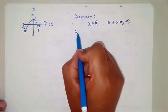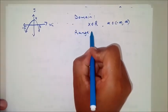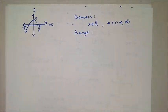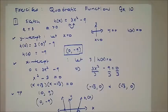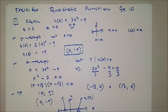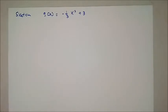Then the range: the graph exists from the turning point at 4 and goes down to negative infinity. So the range is g of x — okay. The next question: g of x equals negative 1 over 3 x squared plus 3. Here a equals negative 1 over 3, so a is less than 0, meaning you expect a downward-opening graph.